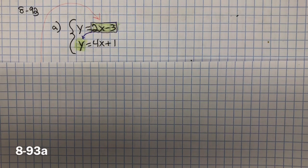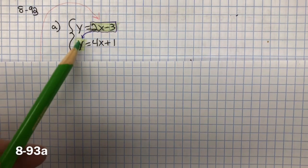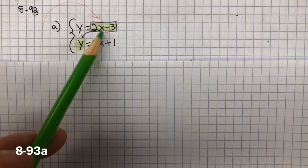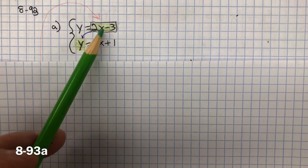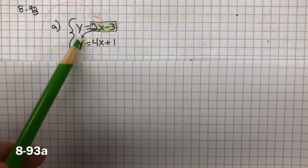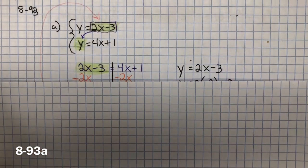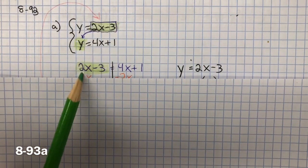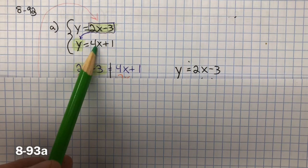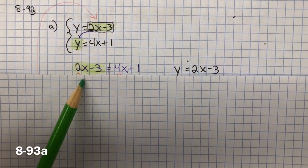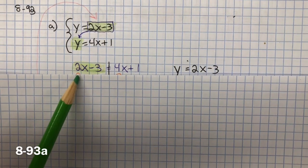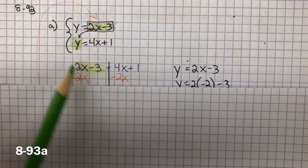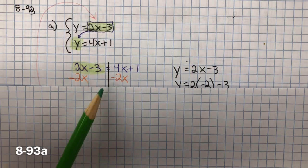For 93A, we need to determine the coordinates of each point of intersection without graphing. I'm going to use the substitution method. Since both equations are in slope-intercept form, y equals mx plus b, I can use substitution. If y equals 2x minus 3, I can plug that into the other equation's y and set them equal: 2x minus 3 equals 4x plus 1. I want to get the x's to the side with the greater value, so I subtract 2x from both sides, creating a zero pair. 4x minus 2x equals 2x.